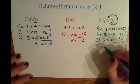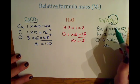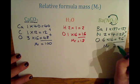you'll find that the Mr, the relative formula mass of barium nitrate is 261.